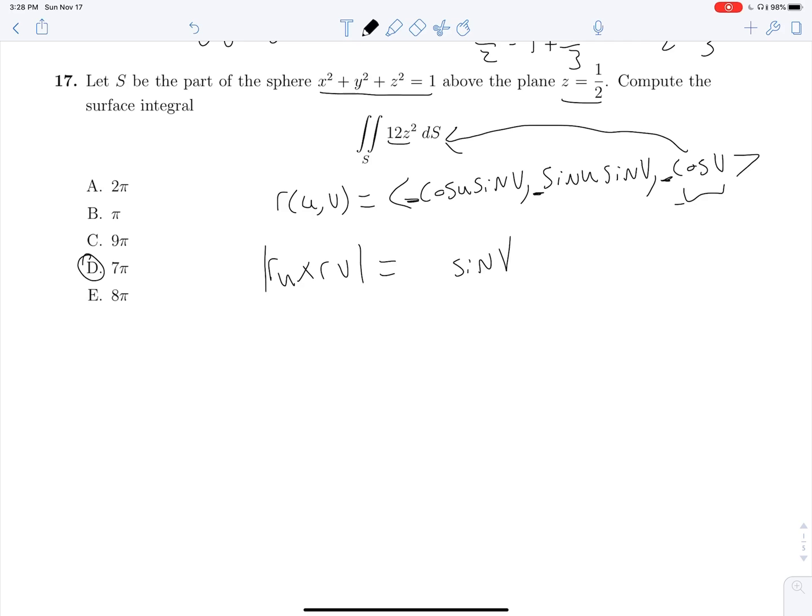So this is helpful because now we can substitute cosine V in for all of the Zs in here because our Z component of R is cosine V. So now we have the double integral 12 cosine squared V, and then we need to multiply by magnitude RU cross RV, which is sine V, DU, DV. We're not bounded on U at all, and we know that U is kind of the analog of theta in this parametrization, and we want to run all the way around, so we know that U will run between 0 and 2 pi, so we can just multiply by 2 pi.